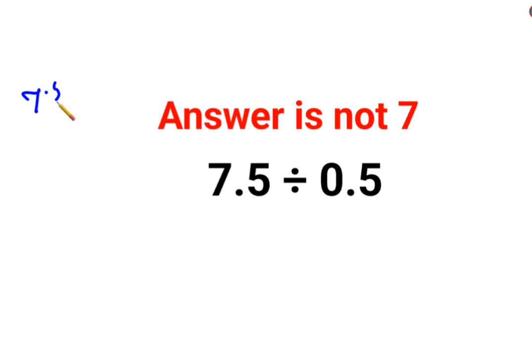So 7.5 can be written as what? 75 upon 10. So let's write this. 75 upon 10 divided by 0.5 can also be written as 5 upon 10.